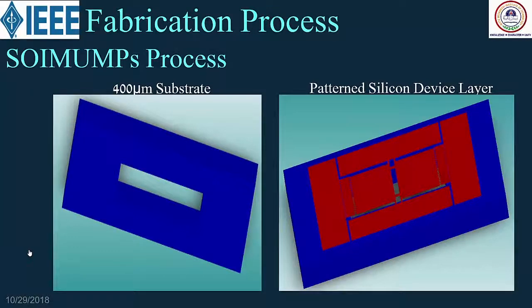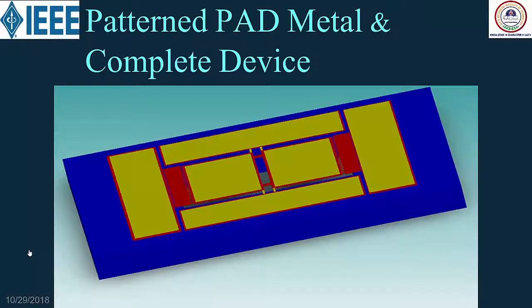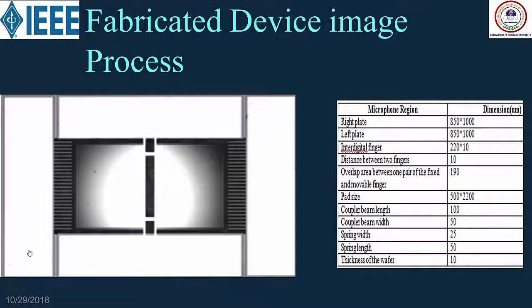The device was fabricated using the SOI MUMPS process at MEMSCAP foundry, thanks to NPMASS funding. The substrate is silicon and the device layer is also silicon, with gold pad metal deposited to complete the device. This is the fabricated device image showing dimensional details. The gap between each comb drive tooth was kept at 10 micrometers — MEMSCAP foundry can achieve 5 micrometers, but we kept 10 to prevent sticking and ensure a released structure. The 190 micrometer overlap area and springs improving flexibility are visible.